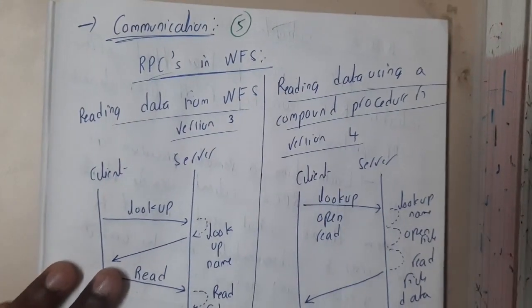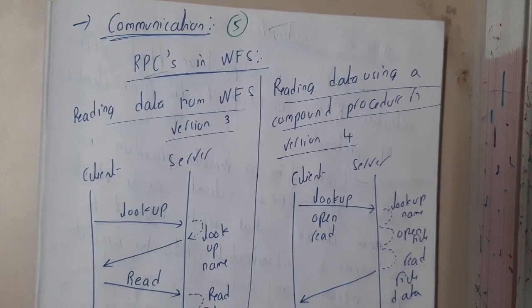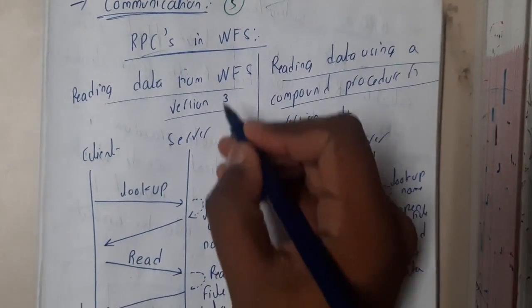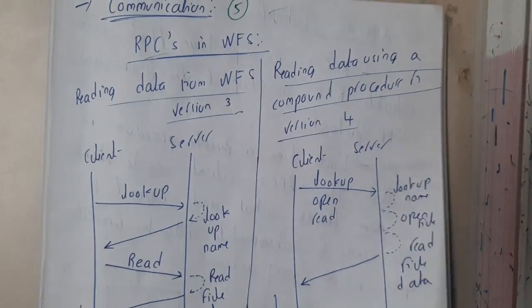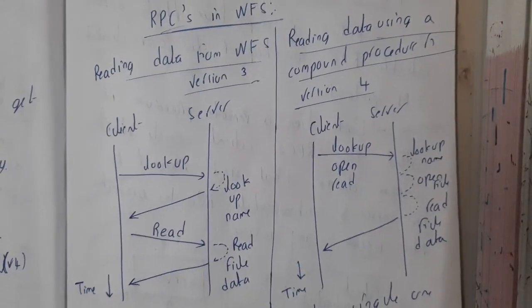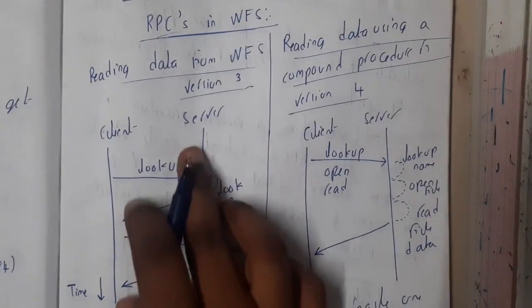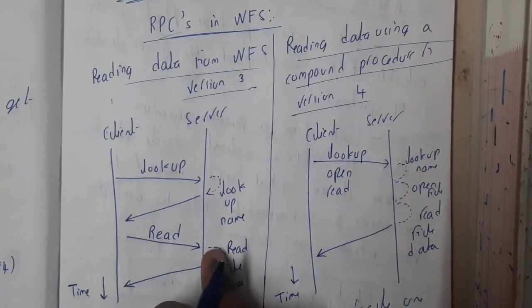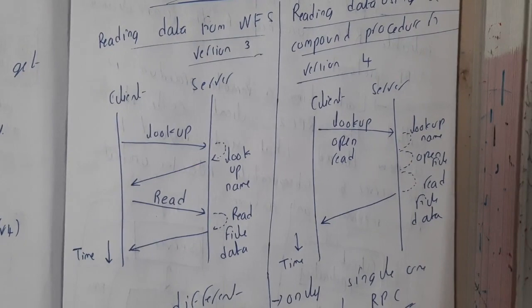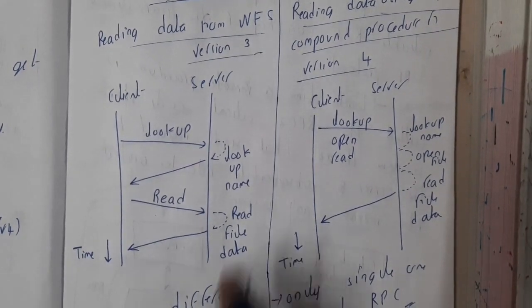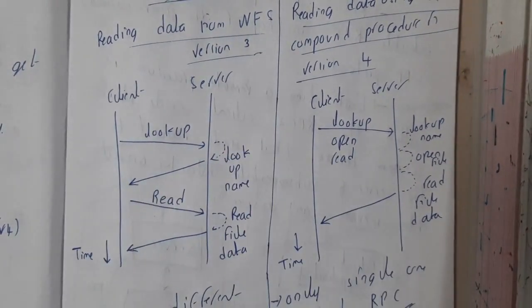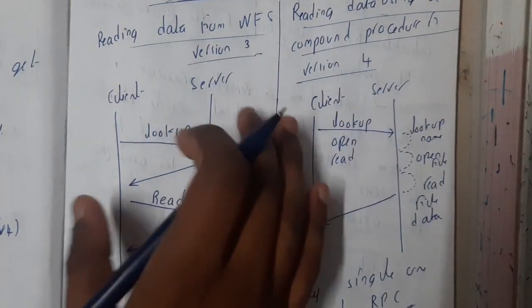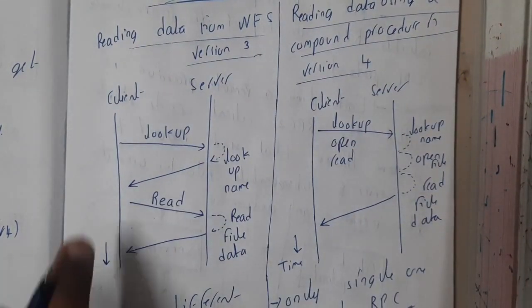Basically in version three and four, the only main difference is that in version three we are having stateless. That is the reason why you need to do operation and you need to go back to client and store it, and again you need to get for data. So those steps will be one after the other. You cannot do in a single go, you cannot do all operations and come back. That is the major difference in version three and version four, the word stateless and stateful.